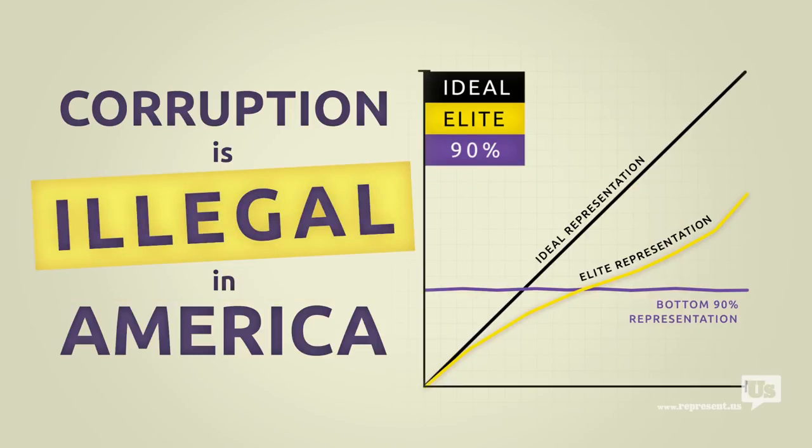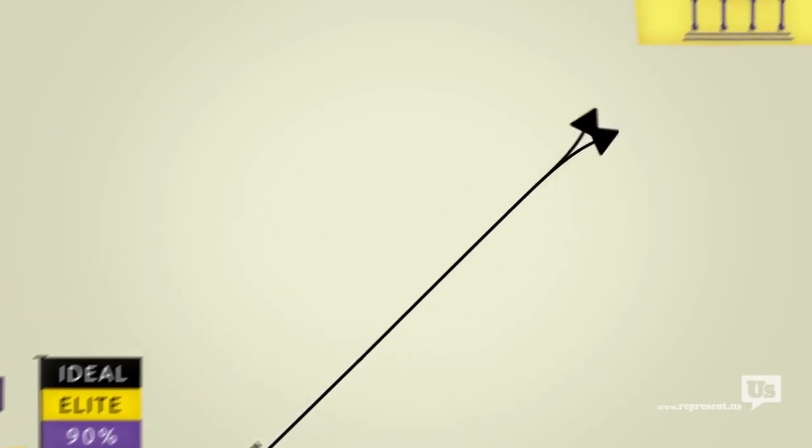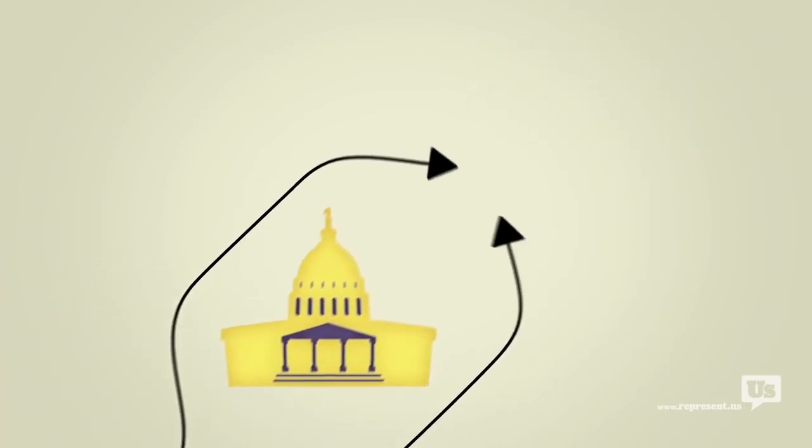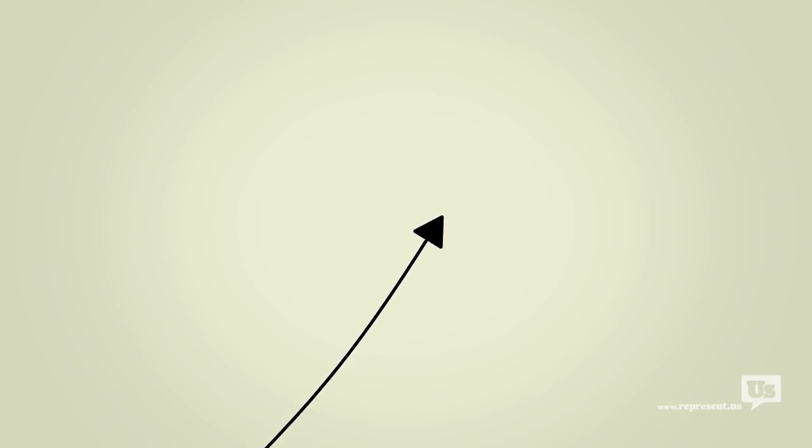I mean one look at this chart will tell you that. What we need is a plan that lets us go around Congress and do what the American people do best. Fix this mess ourselves.